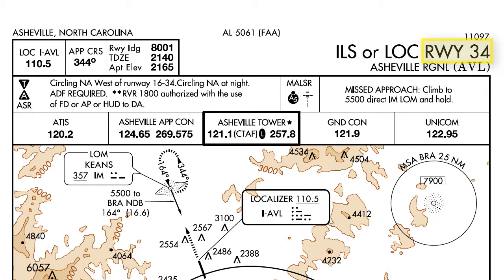The runway 34 indicates that this approach is aligned within 30 degrees of the runway of landing. So when you break out you'll be within 30 degrees of runway 34.